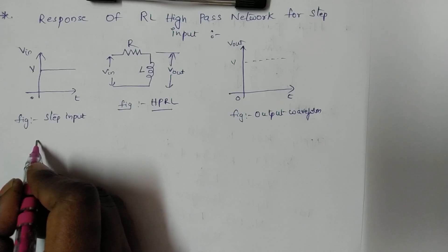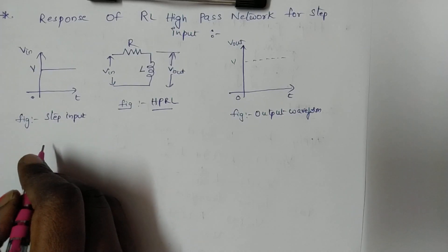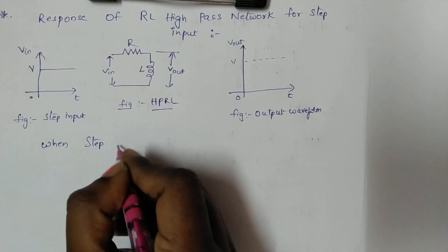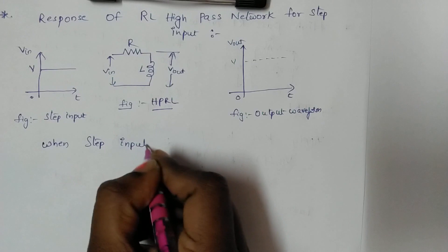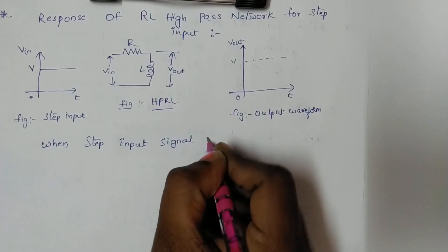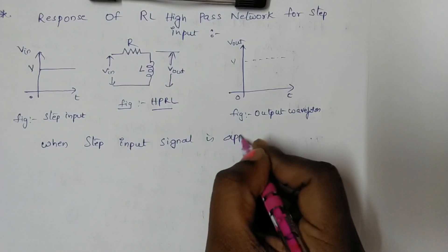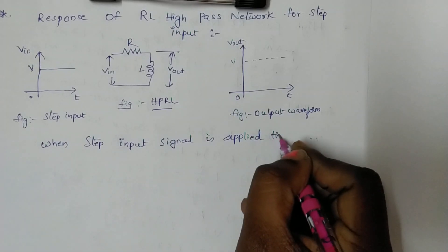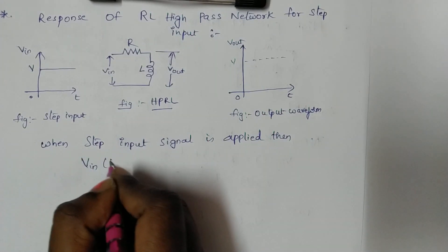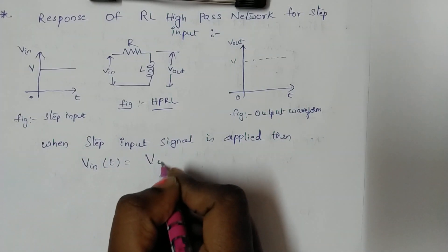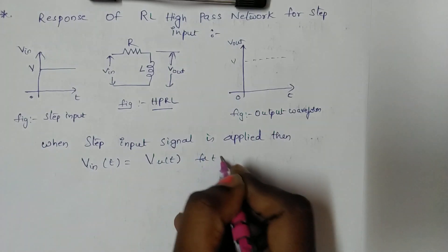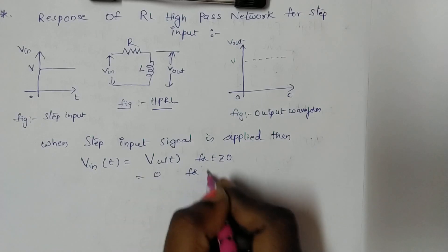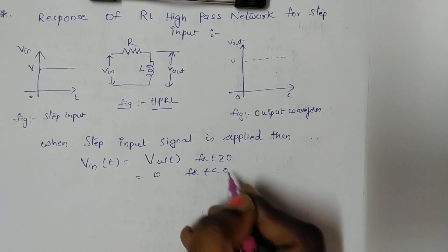When the step input signal is applied, the input function is: V_input(t) = V·u(t), for t greater than 0. We all know this function — it is equal to 0 for t less than 0.